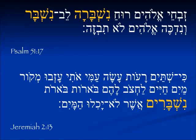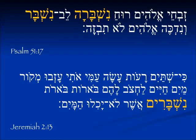Here are some examples from Psalm 51. We see zivchei Elohim — the sacrifices for Elohim — ruach nishbara, a broken spirit, and lev nishbar, a broken heart. In Jeremiah 2:13, the prophet is warning the people from God that they have done two things he does not approve of: they have left the makor chayim, the well of living water, and they have dug for themselves beorot nishbarim — wells that are broken and will not hold water.